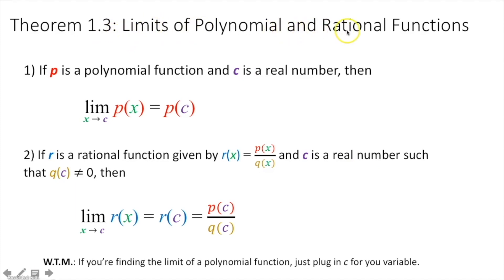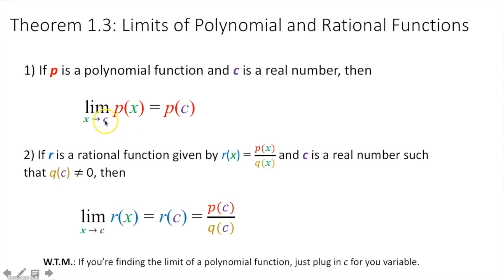Theorem 1.3, the limits of polynomial and rational functions: if p is a polynomial function and c is a real number, then the limit as x approaches c of p(x) equals p(c). Similarly, if r is a rational function r(x) = p(x)/q(x) and q(c) ≠ 0, then the limit as x approaches c of r(x) equals r(c) = p(c)/q(c). All this is saying is that for a polynomial or rational function, just plug in c for x to get your limit.